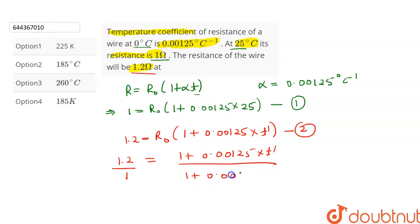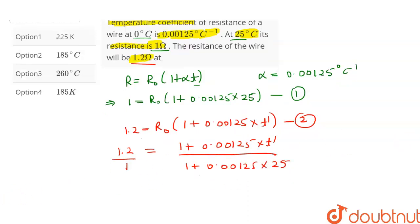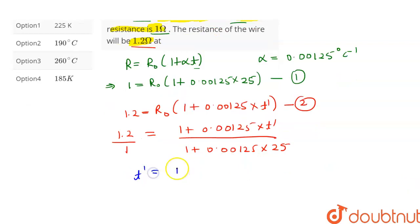After simplifying the equation, t dash is equal to 190 degree Celsius. Now let's check the options.